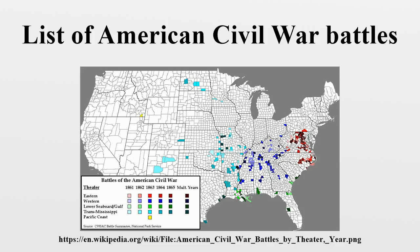Some battles have more than one name. For example, the battles known in the North as Battle of Antietam and Second Battle of Bull Run were referred to as the Battles of Sharpsburg and Manassas by the South. This was because the North tended to name battles after landmarks, whereas the South named battles after nearby towns. See 'Naming the American Civil War' for more details.